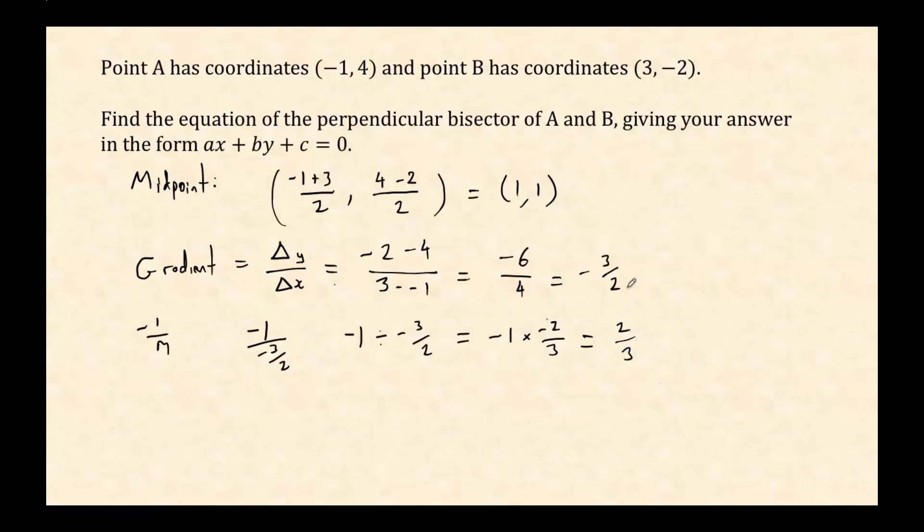A shortcut is that if your gradient is ever a fraction, you really can just flip that fraction upside down and multiply by negative 1. Alright, so we've got our gradient and we've also got the point that it needs to go through.